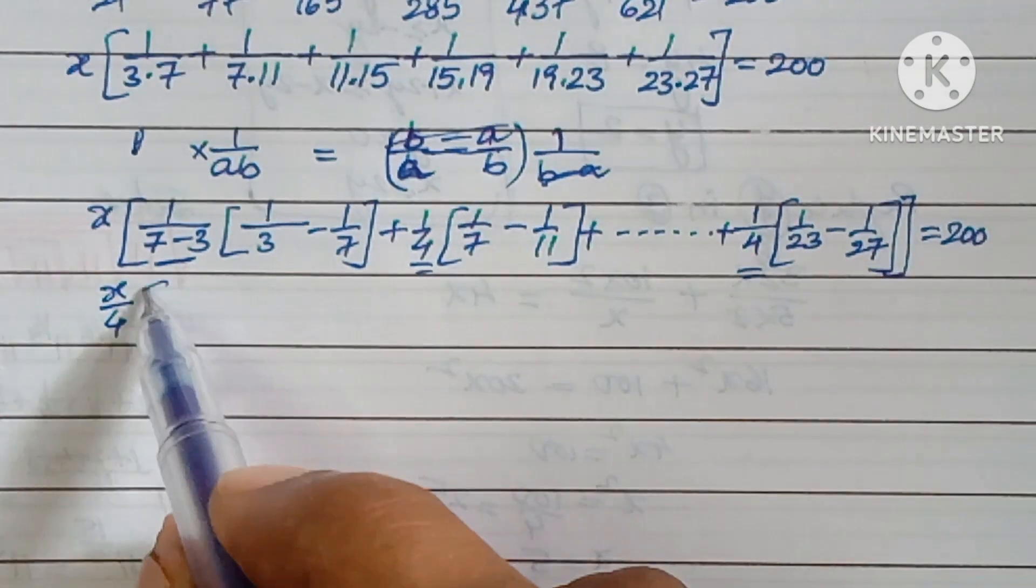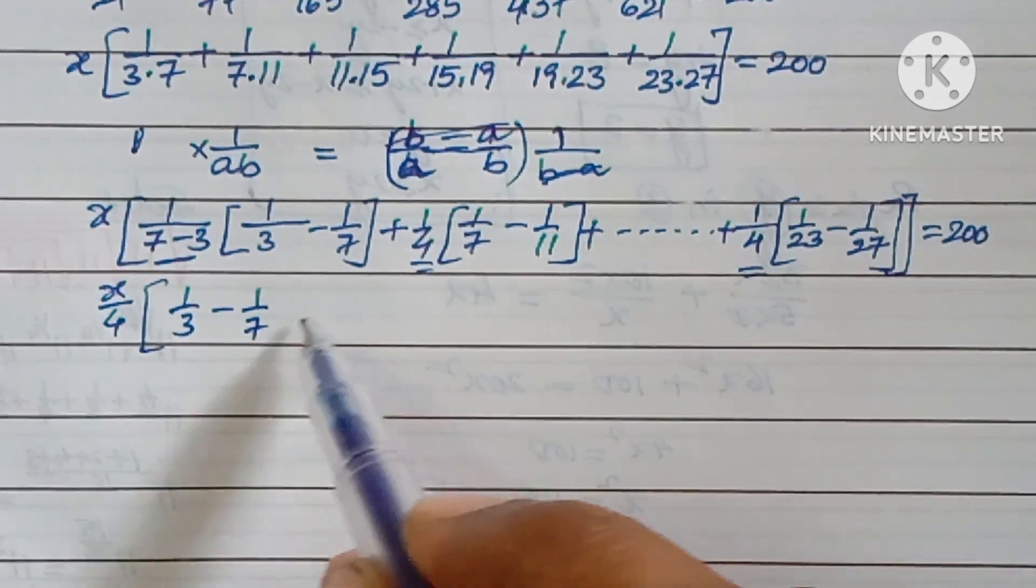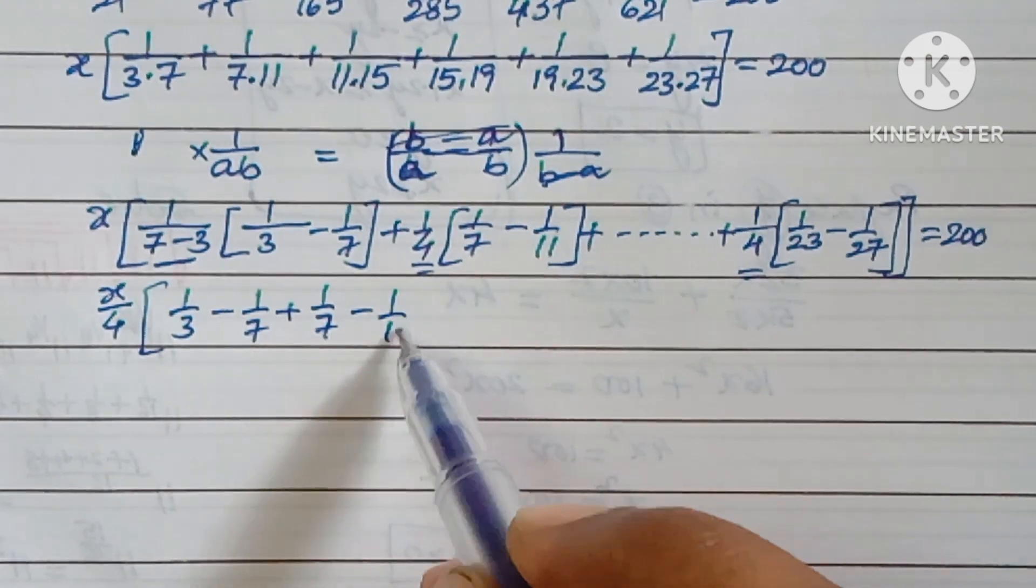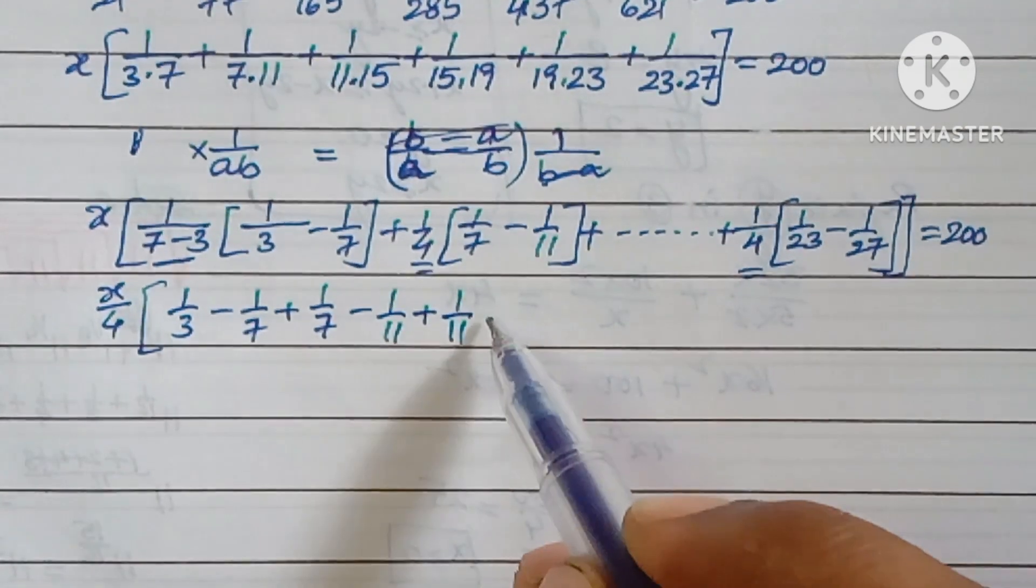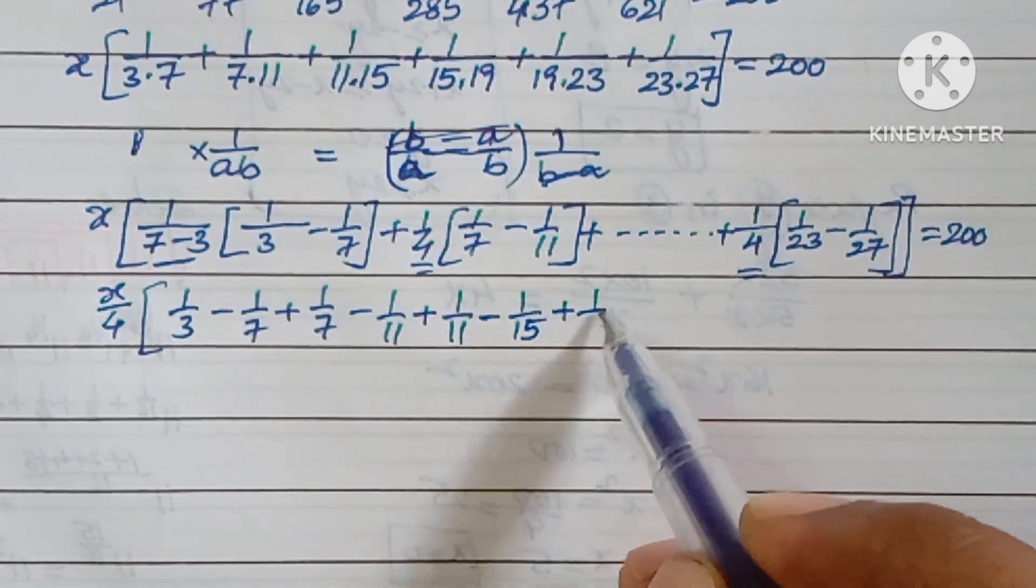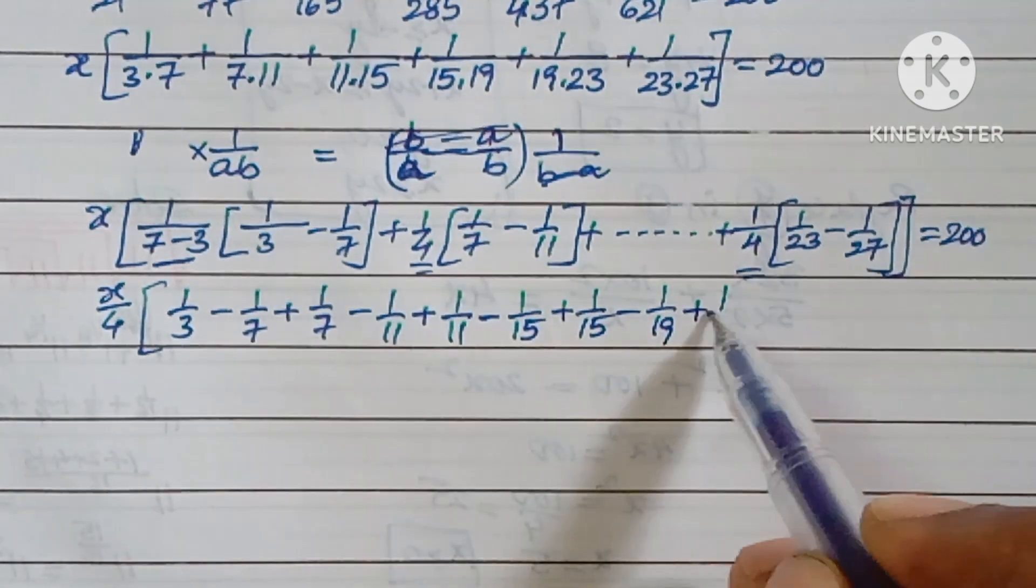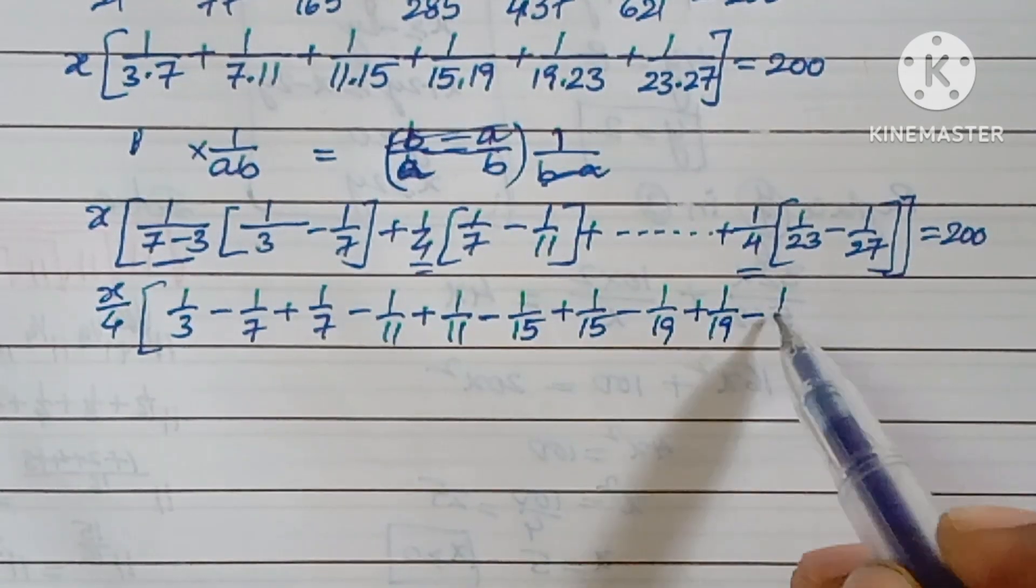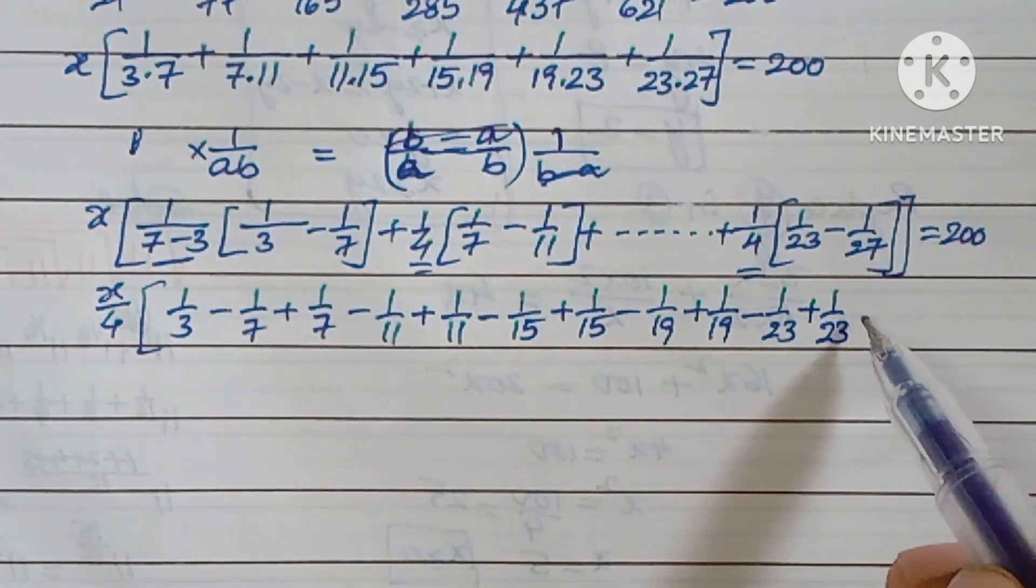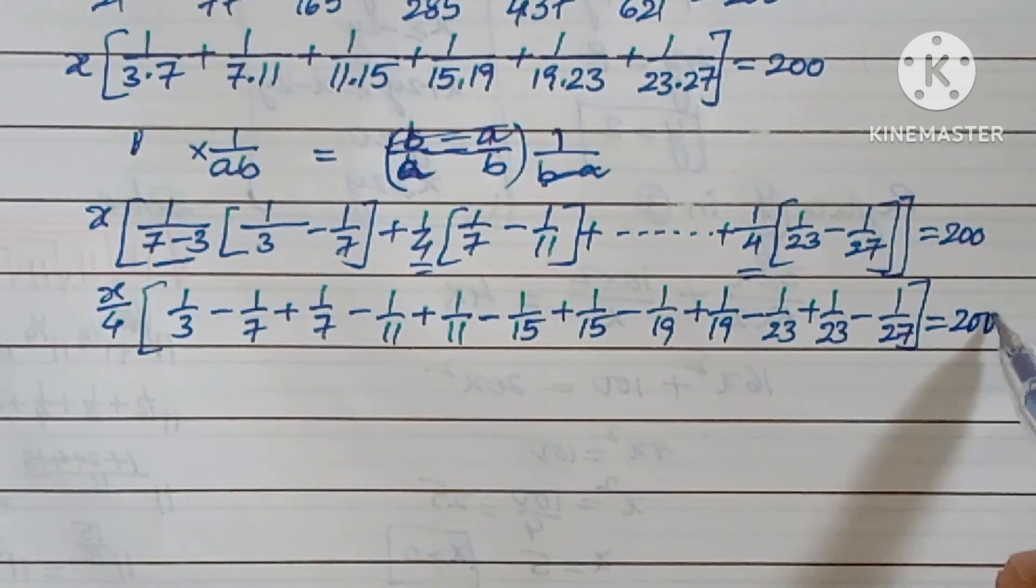x × 1/4 × [1/3 - 1/7 + 1/7 - 1/11 + 1/11 - 1/15 + 1/15 - 1/19 + 1/19 - 1/23 + 1/23 - 1/27] = 200.